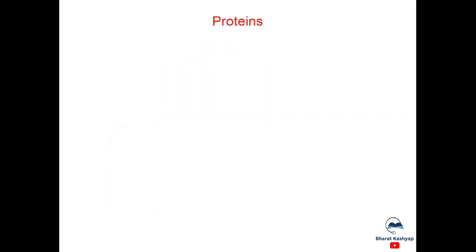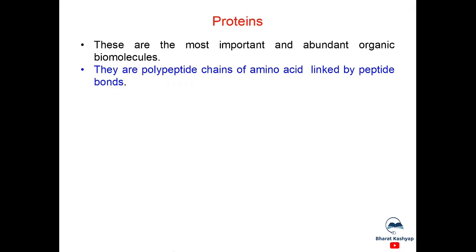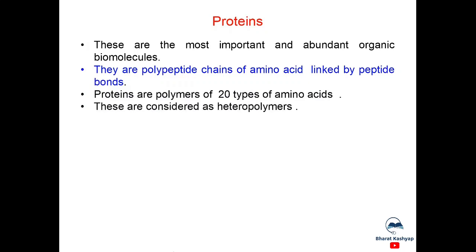Now, let us study Proteins. Let us have some introduction of Proteins. These are the most important and abundant organic biomolecules. They are polypeptide chains of amino acids linked by peptide bonds. Proteins are polymers of 20 types of amino acids. These are considered as heteropolymers.